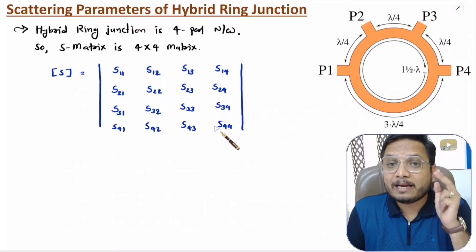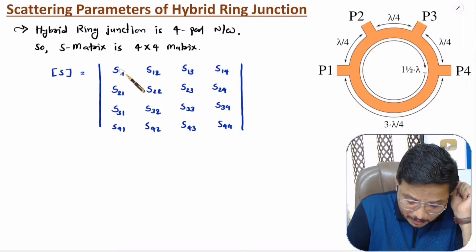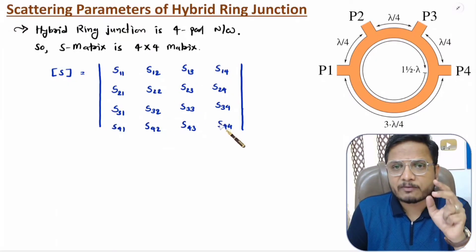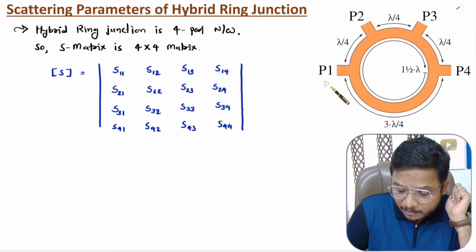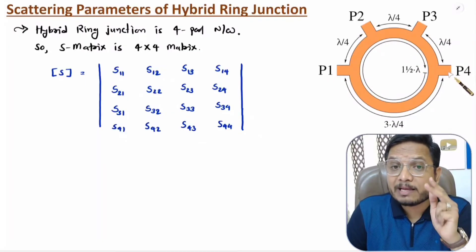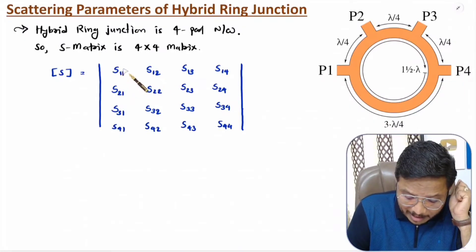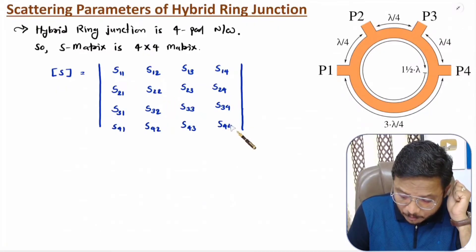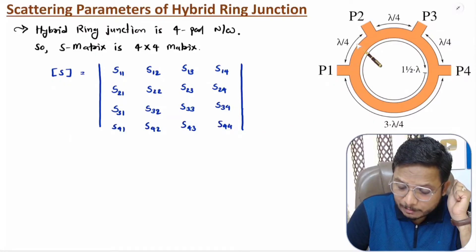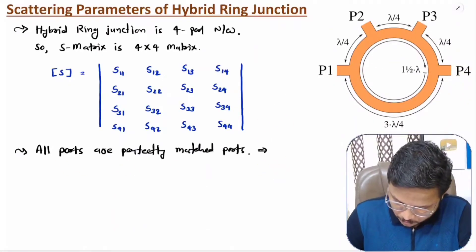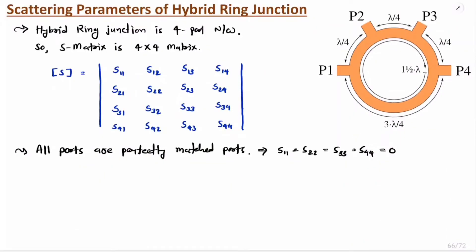Using the working and properties of scattering parameters I'll derive the values. All ports are perfectly matched, meaning return loss at port 1, 2, 3, and 4 is zero. Therefore, scattering parameters S11, S22, S33, and S44 are all zero.